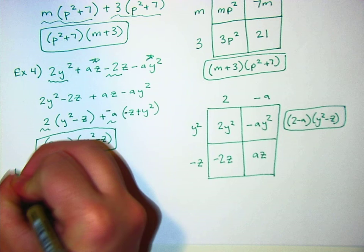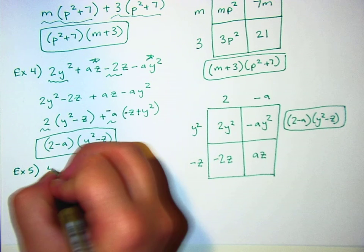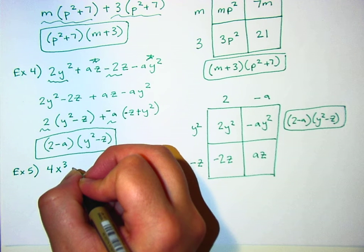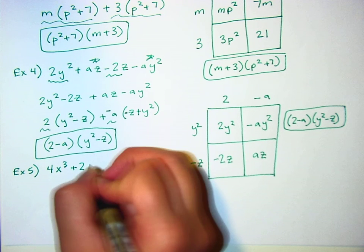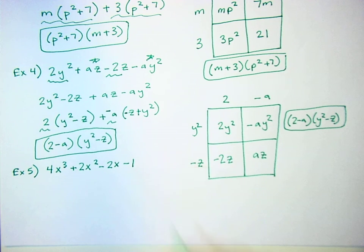Just for kicks, let's do one more. Only I'm not going to do it. Let's do an I'm a winner sign for this. Okay. So 4x cubed plus 2x squared minus 2x minus 1. Do it the wing way, do it the grouping way, whatever you prefer.